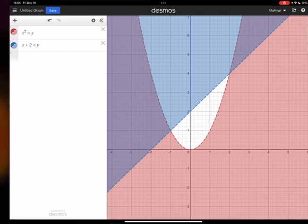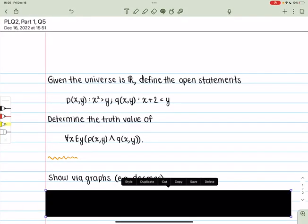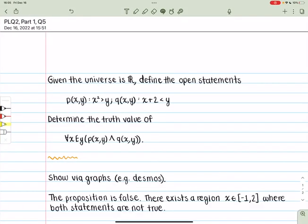And because of that, we can conclude that the proposition is false. There exists a region from x is negative 1 to 2, where both of the statements are not true. Therefore, the overall statement is false.